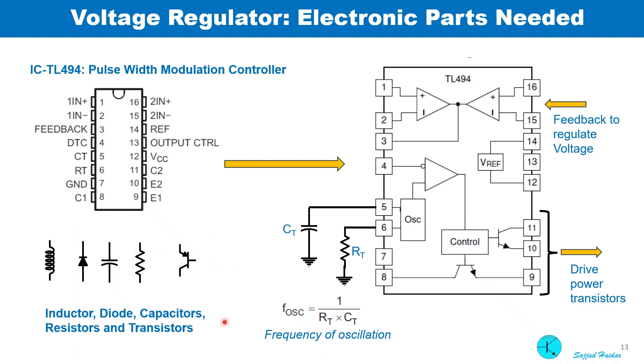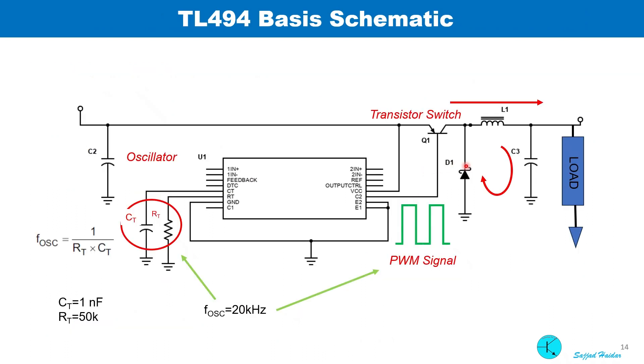There are a few other components: an inductor, a diode, and two power transistors are also needed. This is the basic switching regulator circuit. The oscillator frequency is set at 20 kilohertz using one nanofarad capacitor and 50 kilohm resistor. The output gives a PWM signal which drives the power transistor. When the switch is on, current goes to the output through the inductor. When the switch is off, the stored energy in the inductor is cycled back to the output through this diode. The voltage feedback will determine the output voltage.